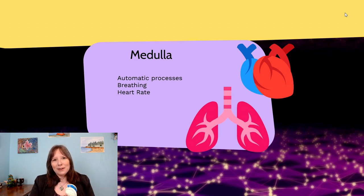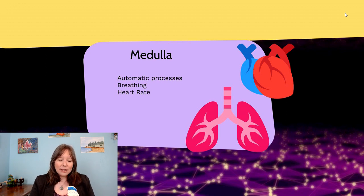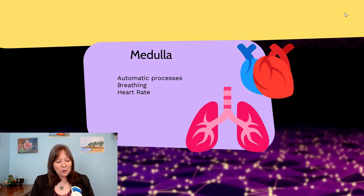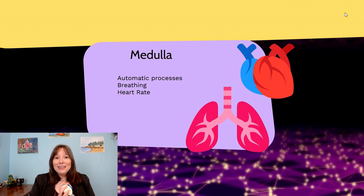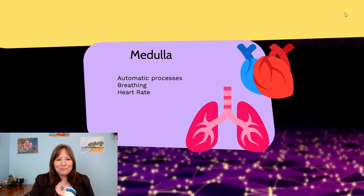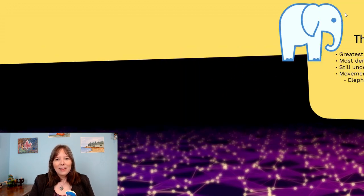Just below the pons is the medulla oblongata, often called simply the medulla. This is where more automatic processes work, such as breathing, blood pressure, and heart rate. Damage to the medulla could be life-threatening — we may go into cardiac arrest, stop breathing, fall unconscious and not wake up. This area is really the part that keeps us alive; everything else is kind of gravy.